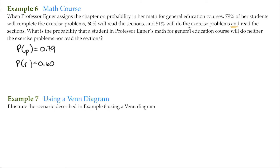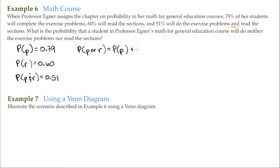And then we have the event of doing the exercise problems and reading the sections, which I'll label as P and R — and that's 51%. Now, using the general addition rule, we can say that the probability of doing the exercise problems or reading the sections equals the probability of doing the problems plus the probability of reading the sections minus the probability of doing both.